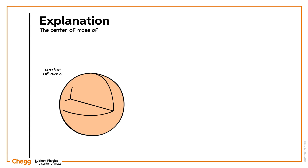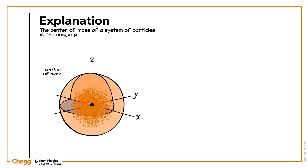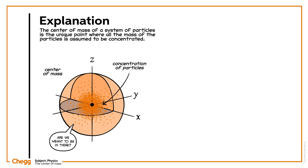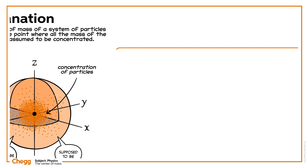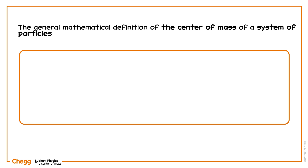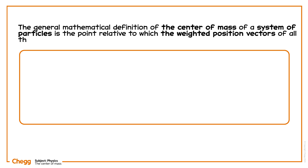The centre of mass of a system of particles is the unique point where all the mass of the particles is assumed to be concentrated. It is not like all the mass is actually concentrated at that point, but it is supposed to be concentrated. The general mathematical definition of the centre of mass is the point relative to which the weighted position vectors of all the particles sum to zero.